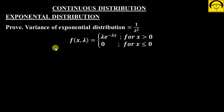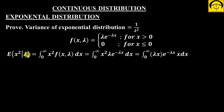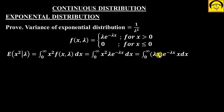Variance kya hoga? Variance = E(x²) − [E(x)]². So hume pahle expected value of x² nikalna padega, matlab second moment. x² hoga to yahi bass — x² multiply by PDF. And again the same thing: simplify x, lambda x dx. So x lambda again, substitute z as another variable.